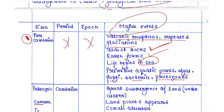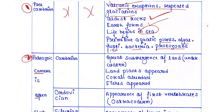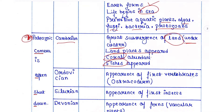The second era is the Paleozoic era, which is further divided into different periods. The first period is Cambrian. During this period, the major event was great submergence of land — land was formed but was under water. Land plants appeared for the first time, corals abounded, and fishes appeared. The second period is Ordovician, during which the appearance of the first vertebrates occurred — the ostracoderm is the first vertebrate you need to remember.